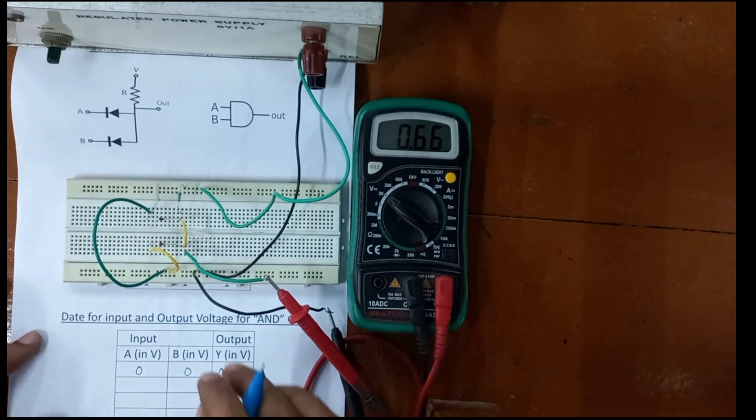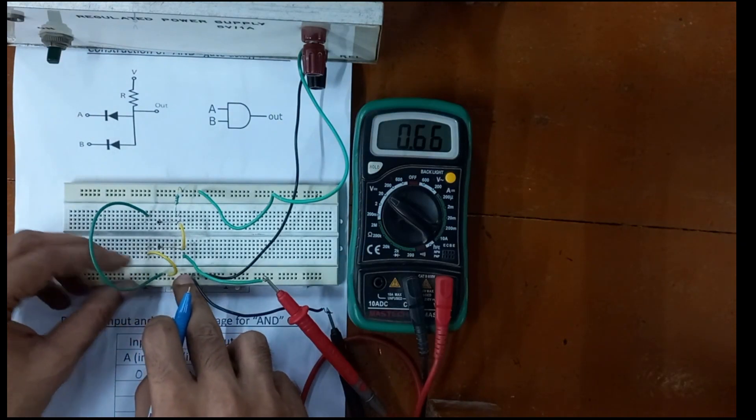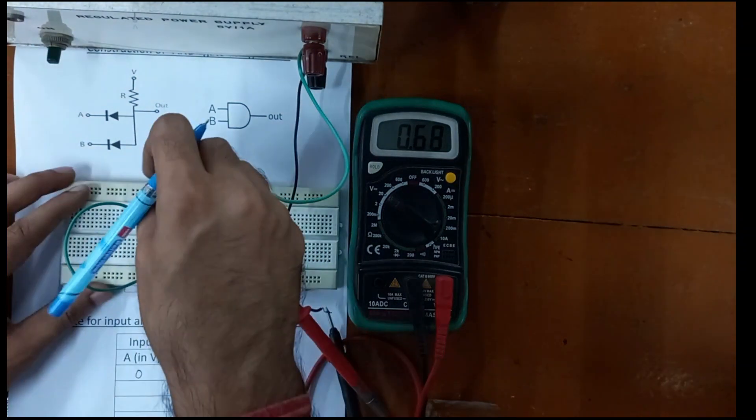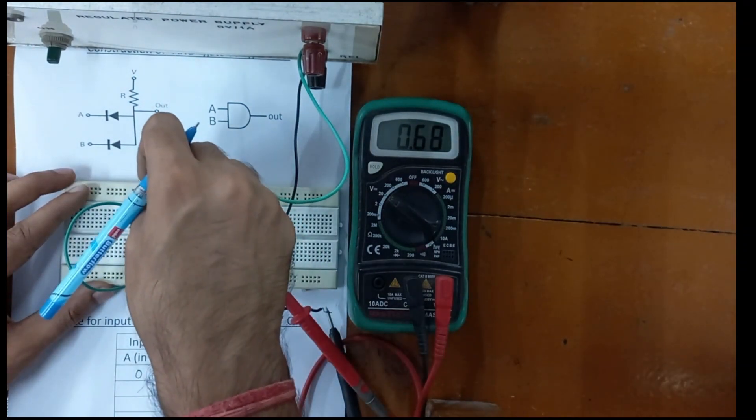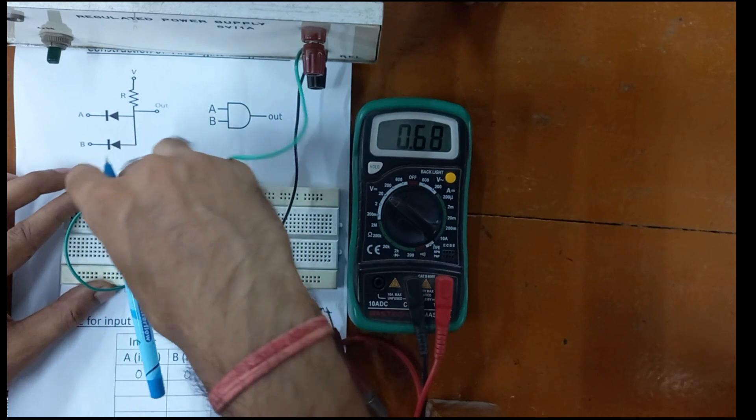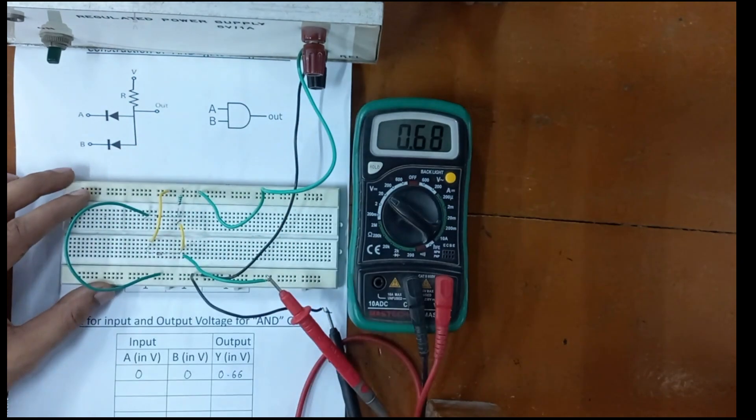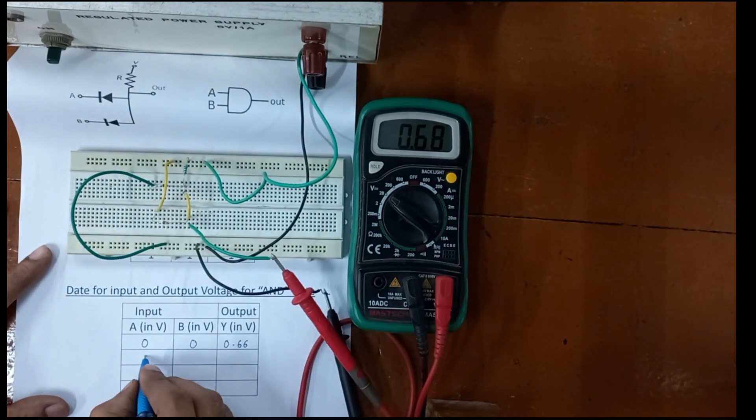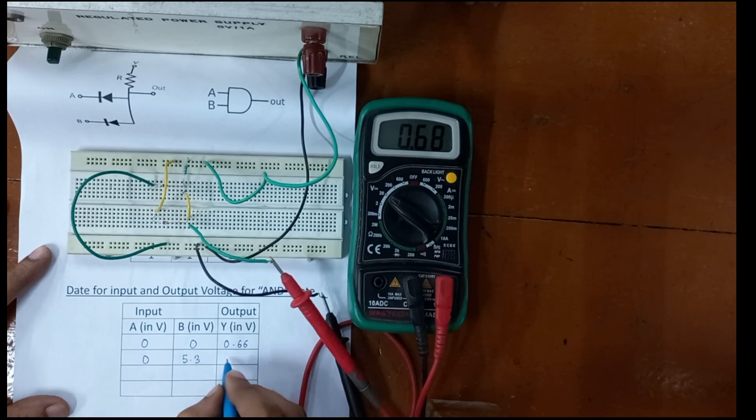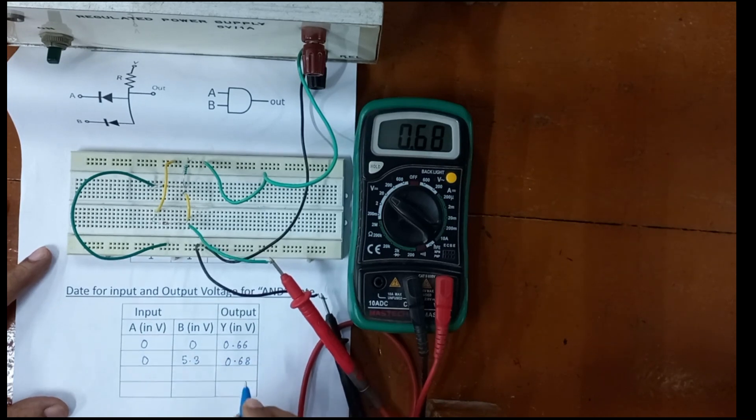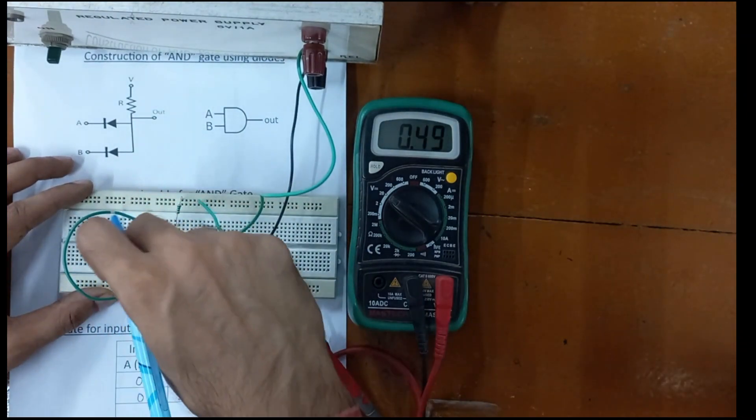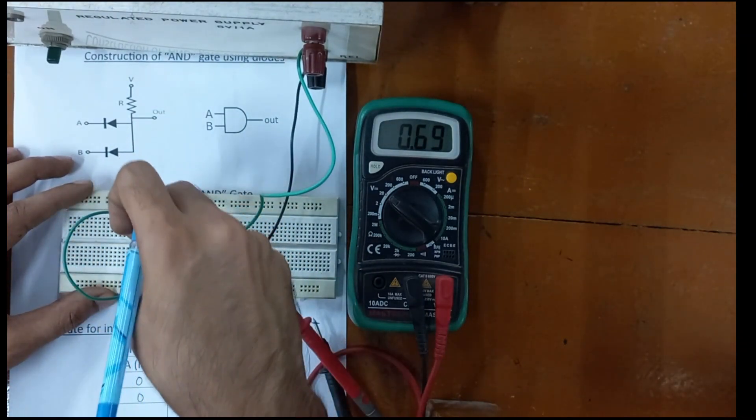How are you getting this 0.66 voltage? This is the voltage drop across the diode. Now just make the B side high. Connect the B side to the high input. Then A is zero, B is 5.3 because our power supply voltage is 5.3. In that case also, the output voltage is 0.68.